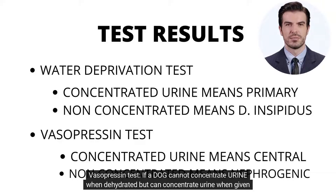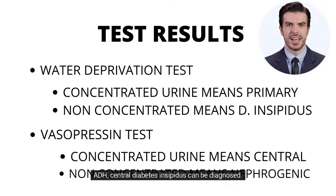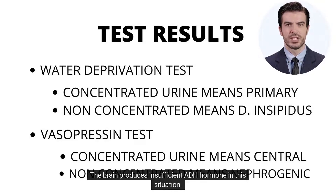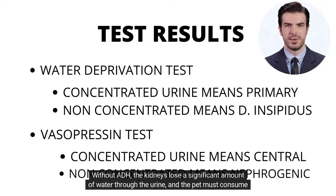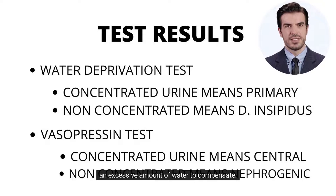Vasopressin test: if a dog cannot concentrate urine when dehydrated, but can concentrate urine when given ADH, central diabetes insipidus can be diagnosed. The brain produces insufficient ADH hormone in this situation. Without ADH, the kidneys lose a significant amount of water through the urine, and the pet must consume an excessive amount of water to compensate.